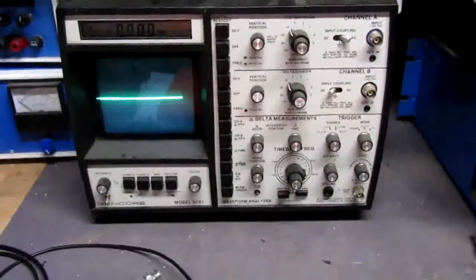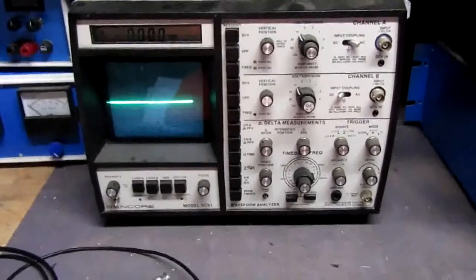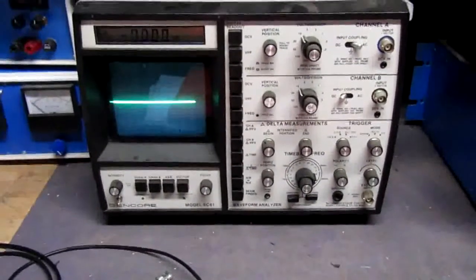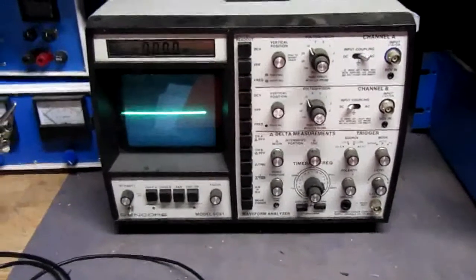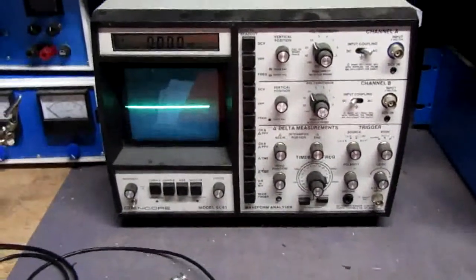Hello. I've heard these were really good scopes. This is a Sencore SC61. I managed to find one on eBay for $40, ran me about $60 with the shipping.